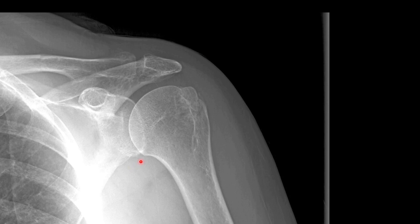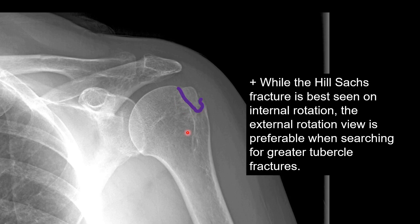This patient presented with shoulder pain following some sort of trauma. If you follow the contours of the humeral head, you can see that there is a fracture of the greater tubercle. Pathology of the greater tubercle is best assessed on the external rotation view, whereas the internal rotation view is preferable to spot the Hill-Sachs defect. The greater tubercle serves as the insertion site for three of the four rotator cuff muscles: the supraspinatus, infraspinatus, and teres minor muscles.